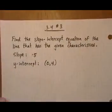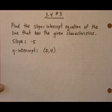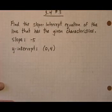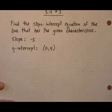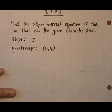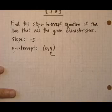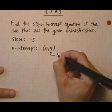Let's try another one. 3.4 number three: find the slope-intercept equation of the line that has the given characteristics. Slope is -5 and y-intercept is (0,4). Well, right away, remember the y-value of the y-intercept is b, so b = 4.